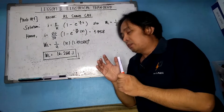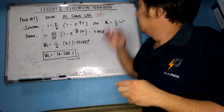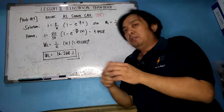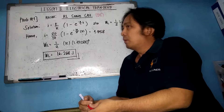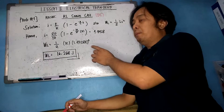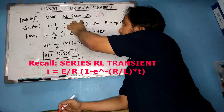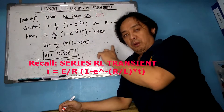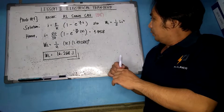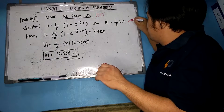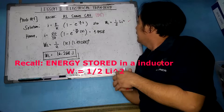This problem is an RL series transient circuit with a DC source. The equation for the transient current is: i = (E/R) × (1 − e^(−R/L × t)). The energy stored, W_L, is equal to one-half L i squared.